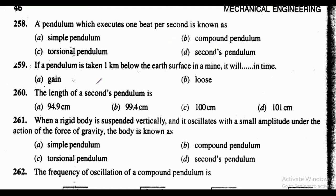The correct answer for question 258 is option D, that is seconds pendulum. Question 259: if a pendulum is taken one kilometer below the earth's surface in a mine, it will — gain or lose time? The correct answer is option A, that is gain. If a pendulum is taken one kilometer below the earth's surface in a mine, it will gain in time.